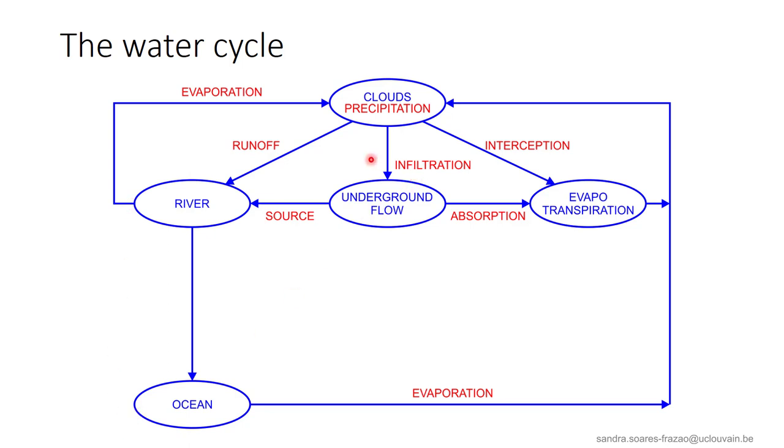Another part of the precipitation infiltrates in the ground, and a third part is intercepted by vegetation. Underground flow, fed by infiltration, either flows towards rivers or is absorbed by vegetation.